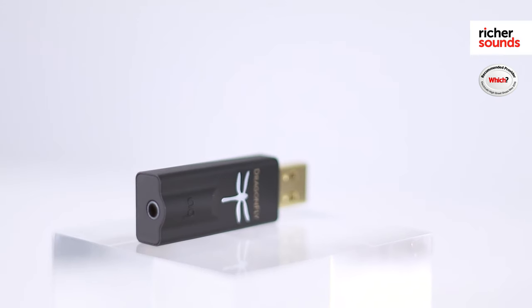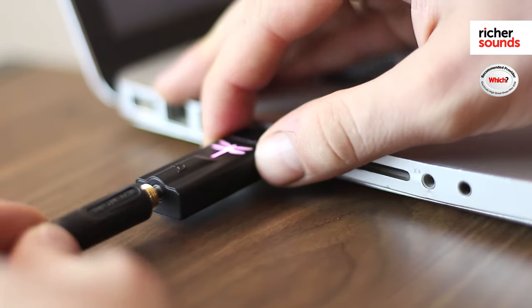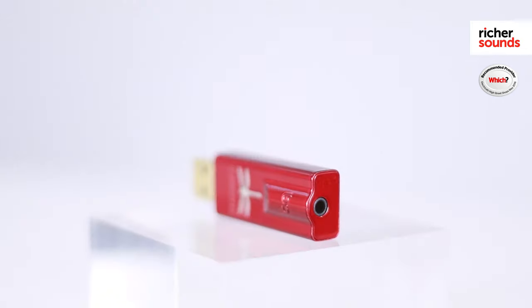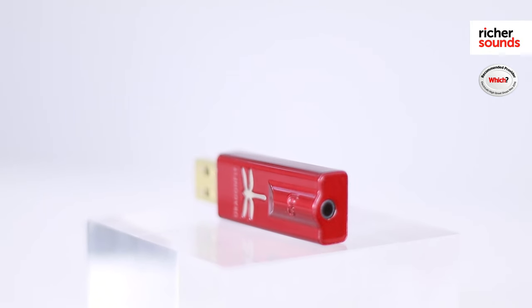One of the main differences between the Dragonfly Red and Dragonfly Black is the voltage output. The black comes with 1.2 volts, which is great for those with easy to drive headphones. However, if your headphones require a bit more oomph and are harder to drive, I would definitely recommend that you go for the red one with its 2.1 voltage output.